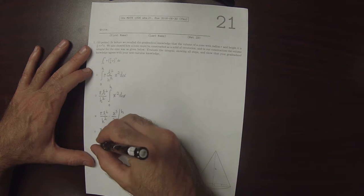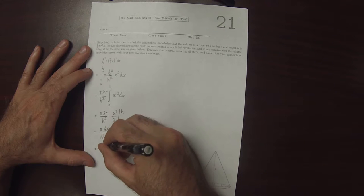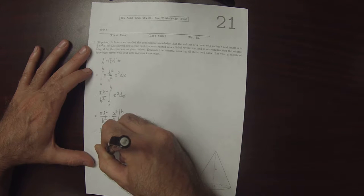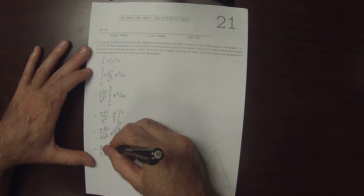So evaluating that, that's pi r squared over 3 h squared h cubed.